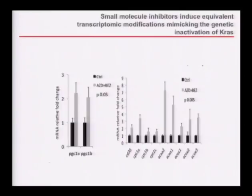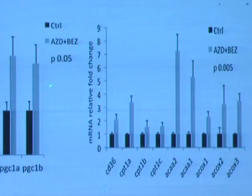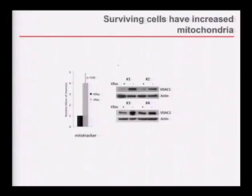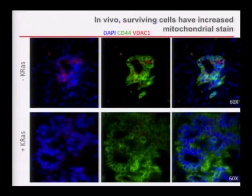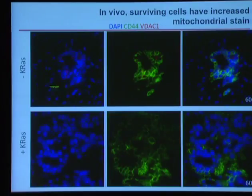This is some of the validation done when treating with signal transduction inhibitors rather than RAS extinction. You see the same induction of PGC1-alpha and beta, and the same regulation downstream. What was interesting is that the surviving cells have an increase in mitochondria, as measured by the abundance of VDAC1 or with MitoTracker. In immunofluorescence with staining for DAPI, CD44, and VDAC1, the surviving cells in the absence of KRAS have a much stronger staining for mitochondria.